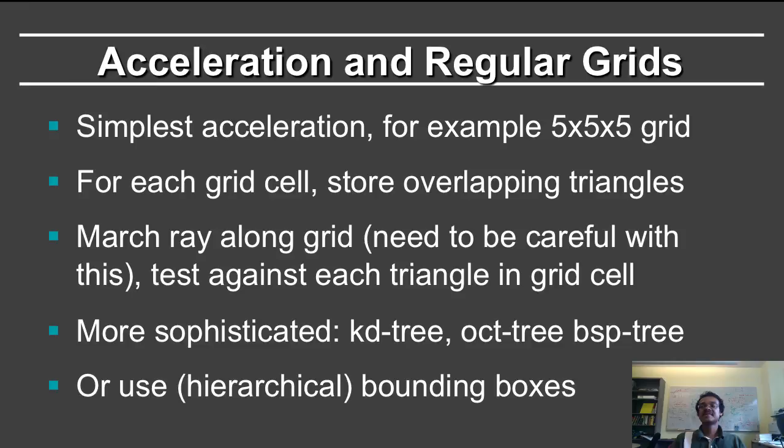So regular grids are the simplest acceleration structure, for example a 5x5x5 grid. For each grid cell, you store all the overlapping triangles. You march the ray along the grid, you need to be careful in doing this efficiently, and you test against each triangle in the grid cell. There are of course more complicated spatial data structures like KD trees, OCT trees, BSP trees, or you can use hierarchical bounding boxes.